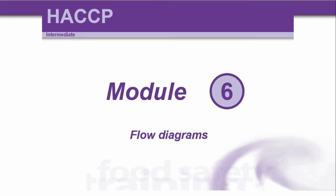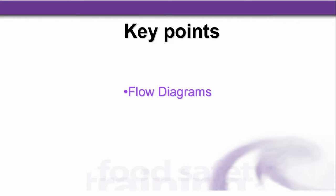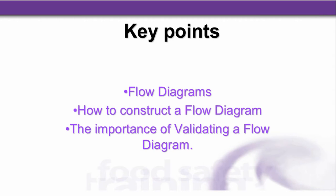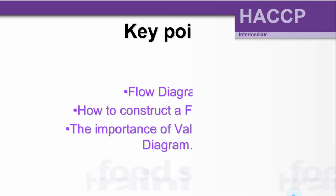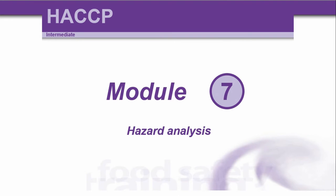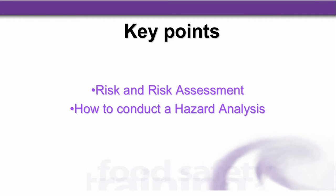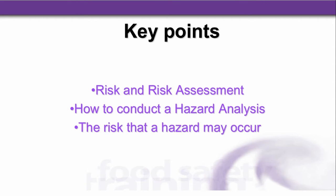Then we looked at module six, flow diagrams. Key points covered how to construct a flow diagram and the importance of validating a flow diagram — in other words, walk the talk. That took us on to module seven, hazard analysis. The key points included risk and risk assessment, how to conduct a hazard analysis, the risk that a hazard may occur, and the severity of a hazard.